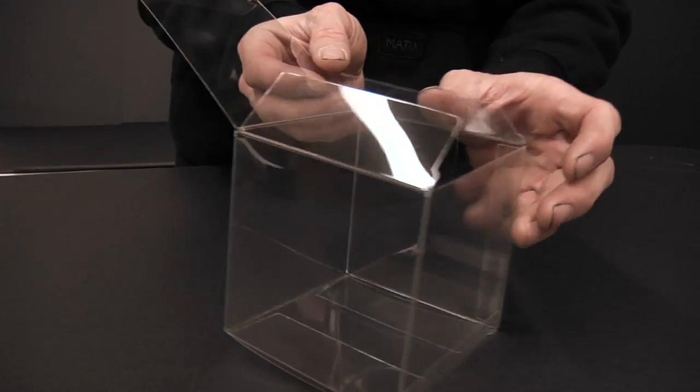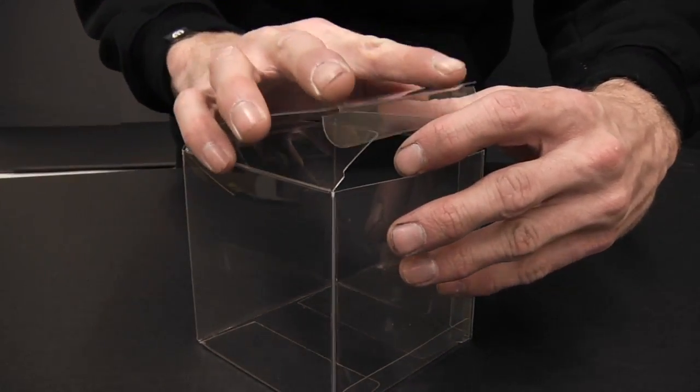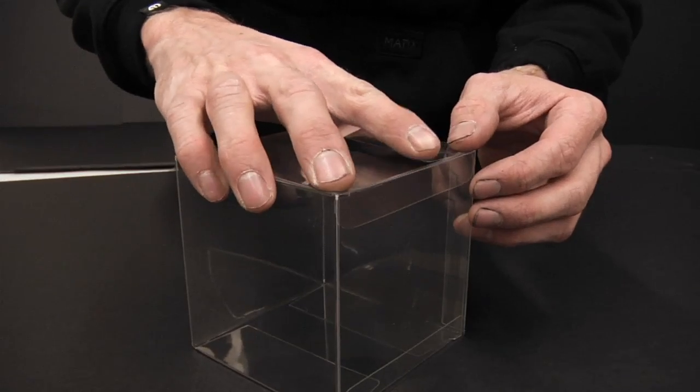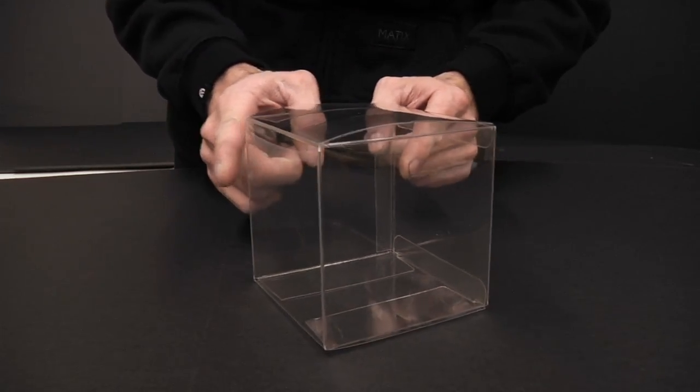Fold over the top flap and insert the top tab until it locks. If this leaves you with a slight bow on the top flap, use our light pinching technique to square it off.